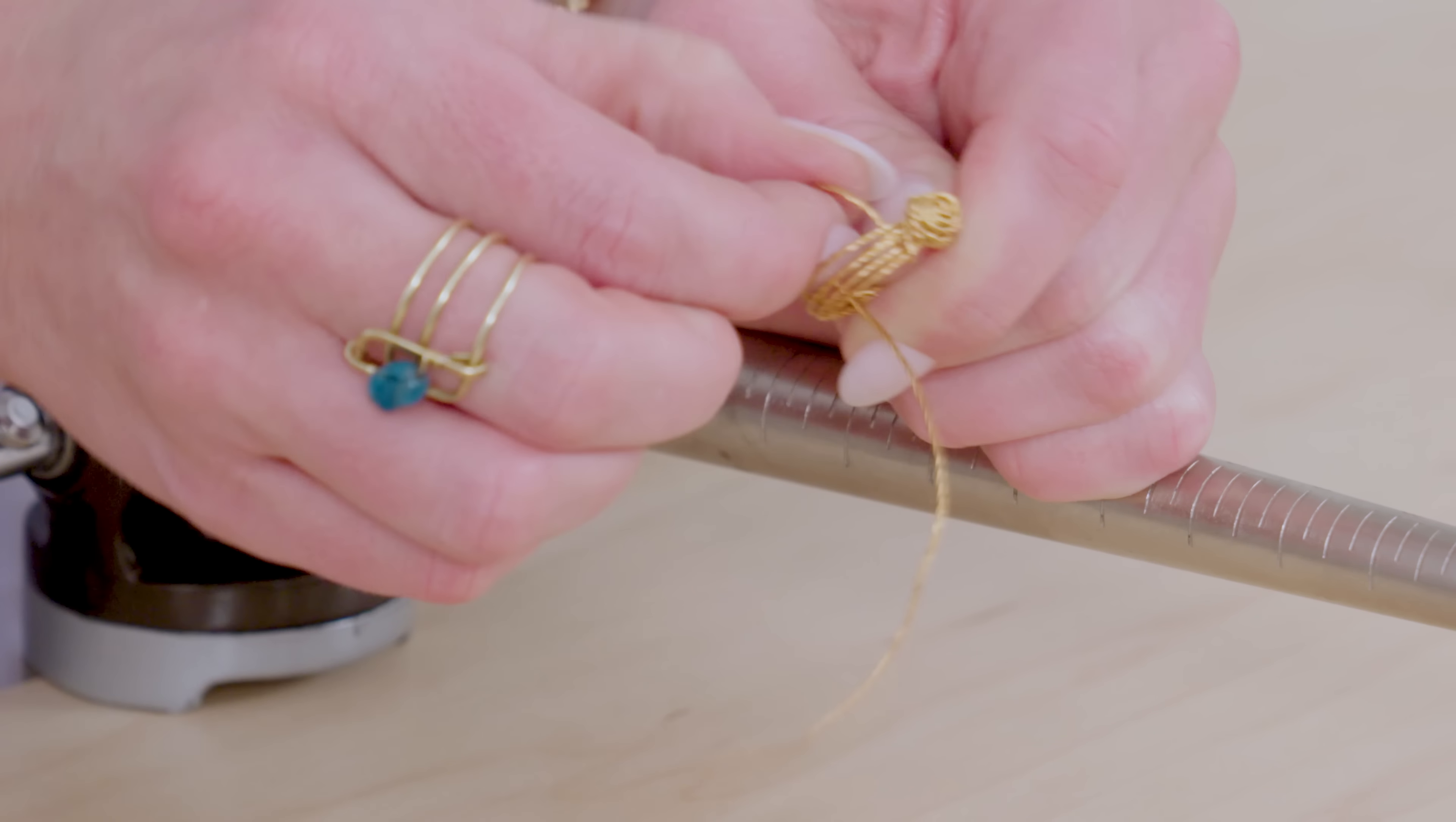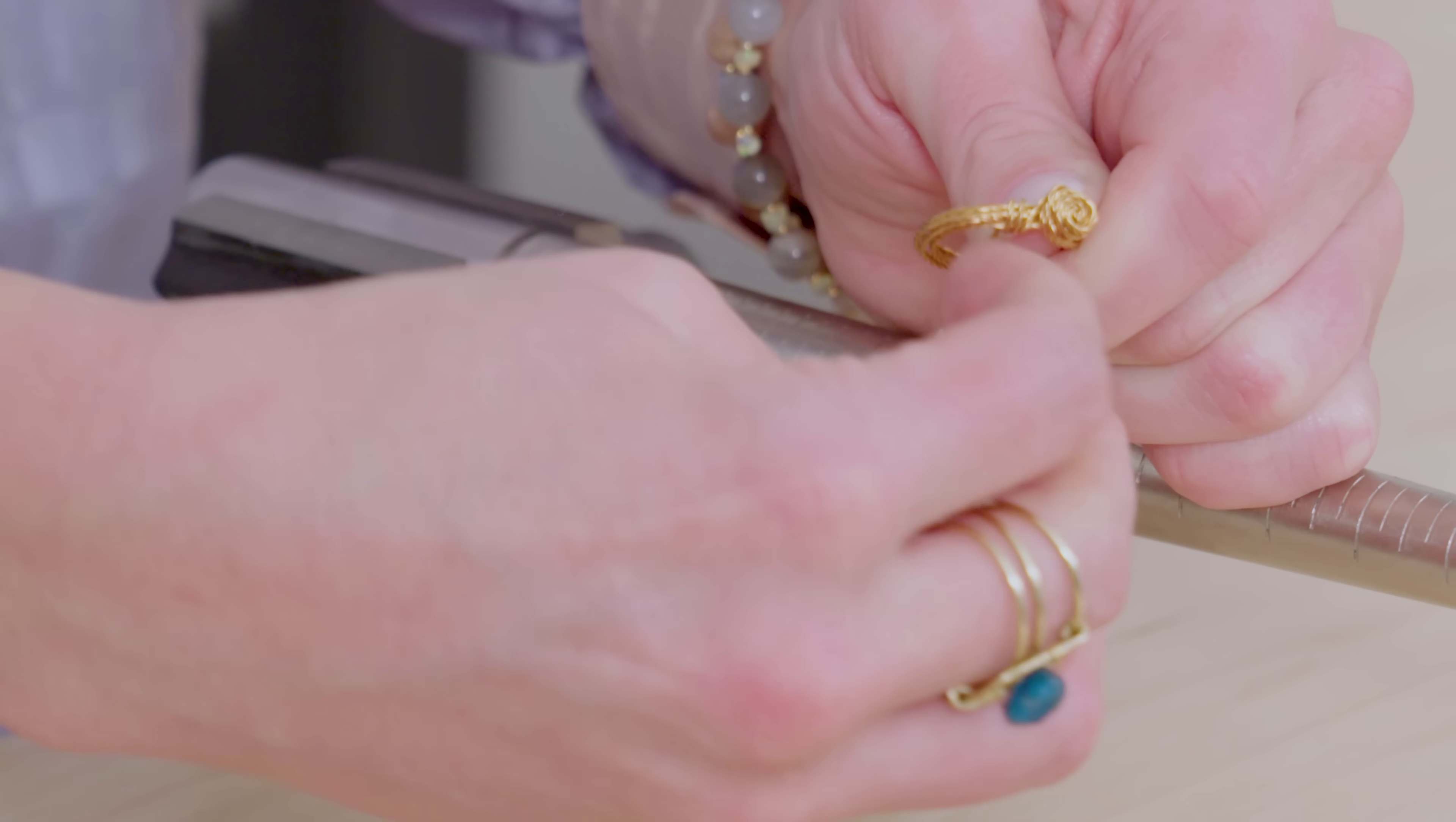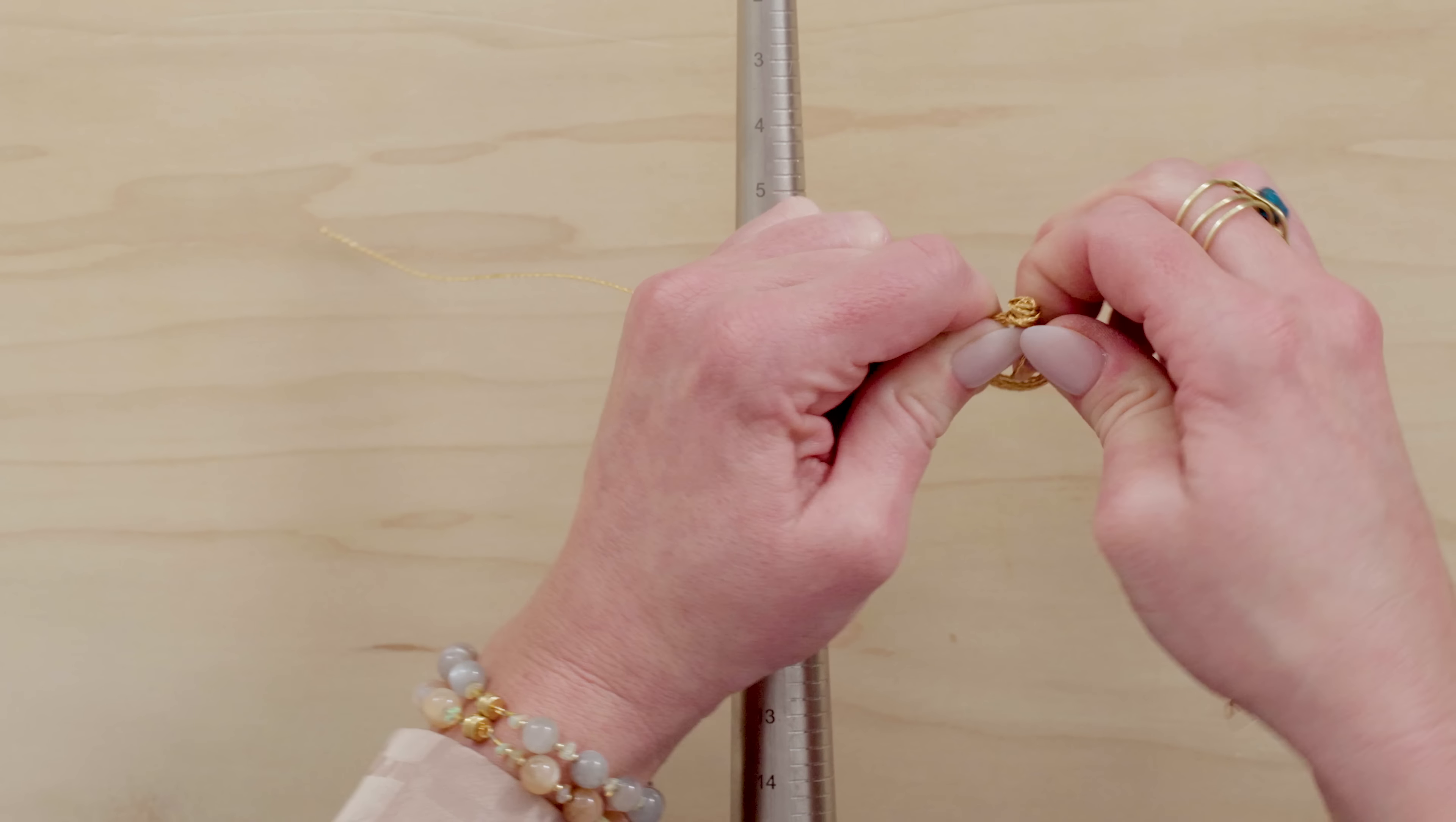And kind of hold it pretty firm and then with one tail you're going to wrap a tight little coil here of about three. So push it through, pull it around, push it through, pull it around.